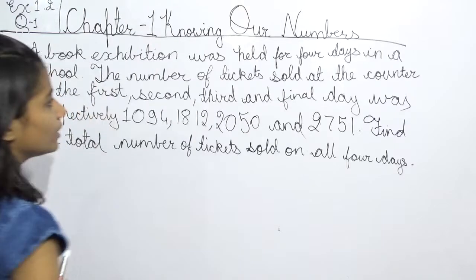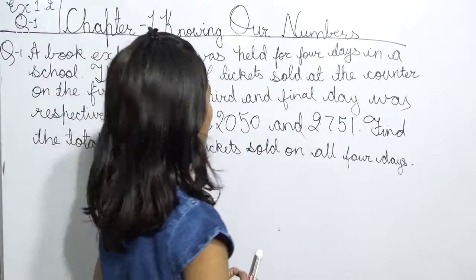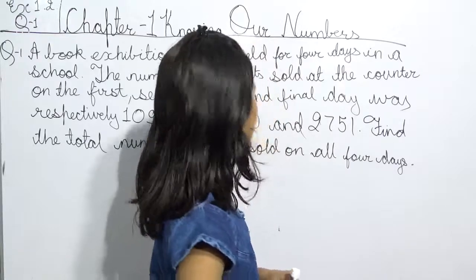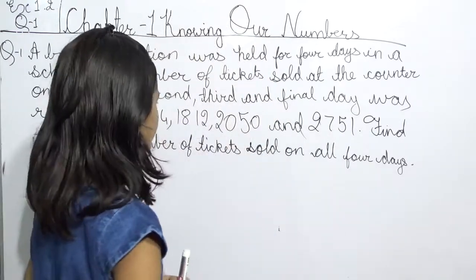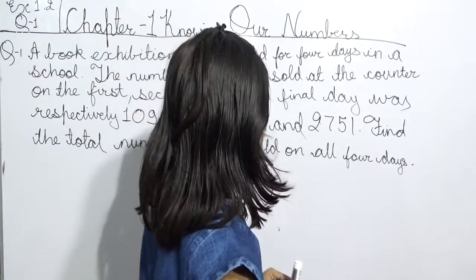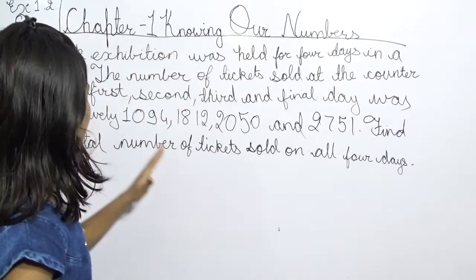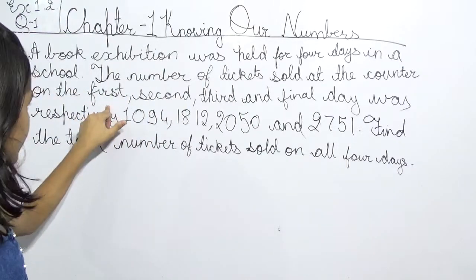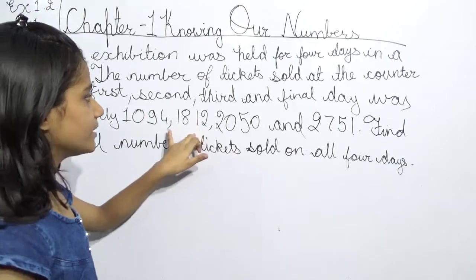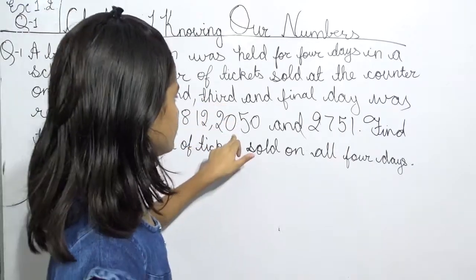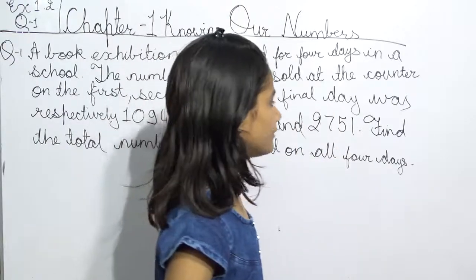The number of tickets sold at the counter on the 1st, 2nd, 3rd and 4th day was respectively: the first day was 1094, the second day was 1812, the third day was 2050, and the final day was 2751 tickets sold.